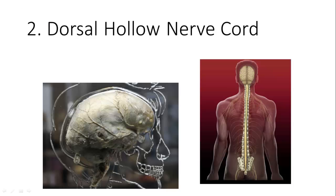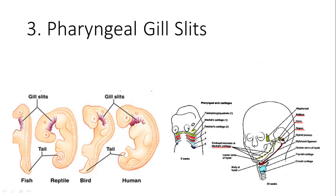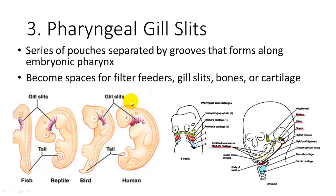The dorsal hollow nerve cord is the tube that develops from the endoderm and lies dorsal to the notochord, closer to the surface. It becomes the brain and the spinal cord. Pharyngeal gill slits are a series of pouches, sometimes called pharyngeal pouches, separated by grooves that form along the pharynx — the throat area. These become spaces for filter feeders, gill slits in fish, or bones and cartilage in other vertebrates. Our thyroid cartilage, which surrounds the Adam's apple, also formed from pharyngeal gill slits.